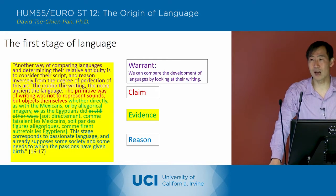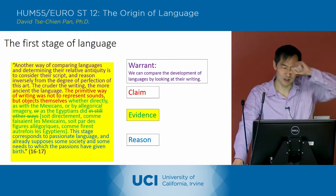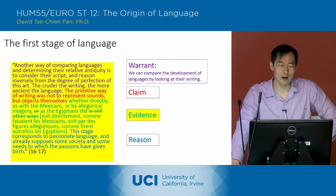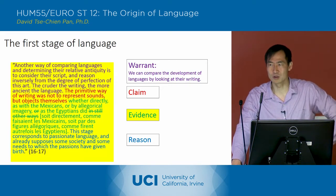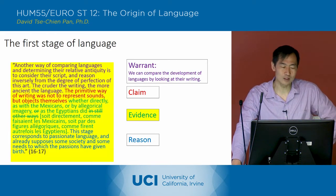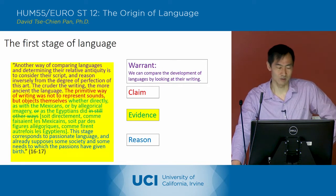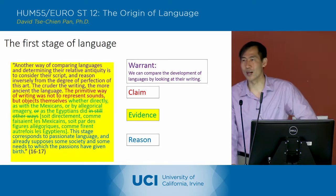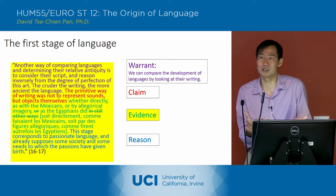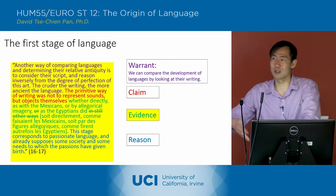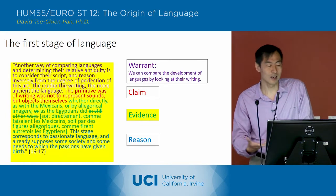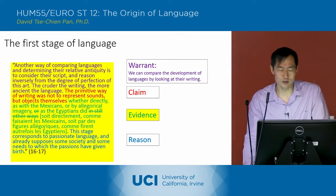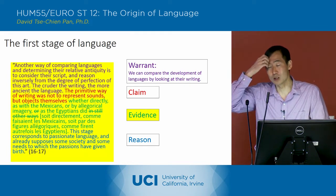He starts out with his warrant where he says on page 16: 'Another way of comparing languages and determining their relative antiquity is to consider their script — the way they're written — and reason inversely from the degree of perfection of this art. The cruder the writing, the more ancient the language.' So this is his warrant: we can look at writing systems in order to determine which languages are older.